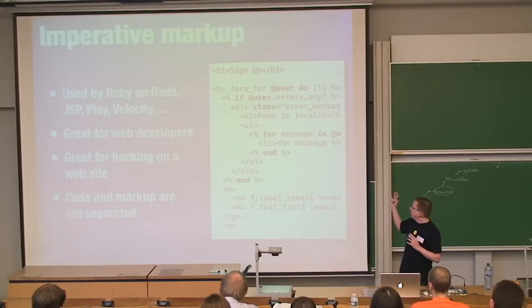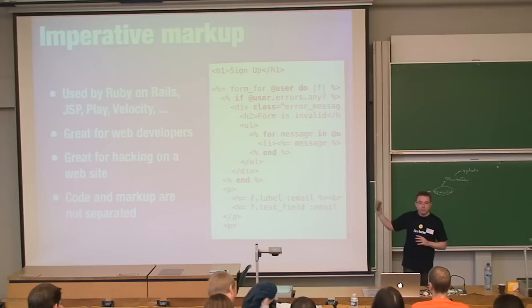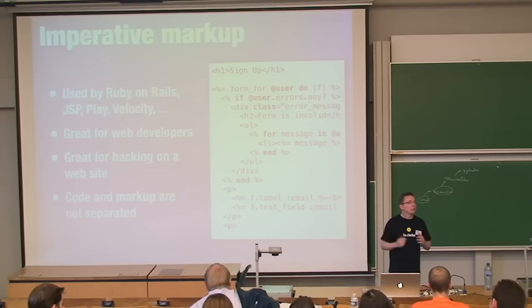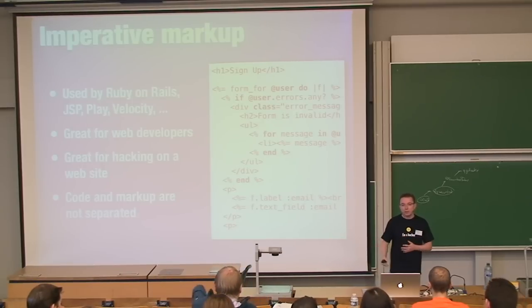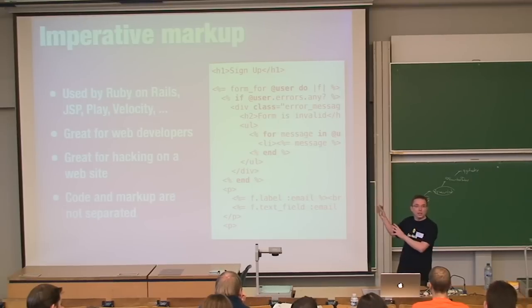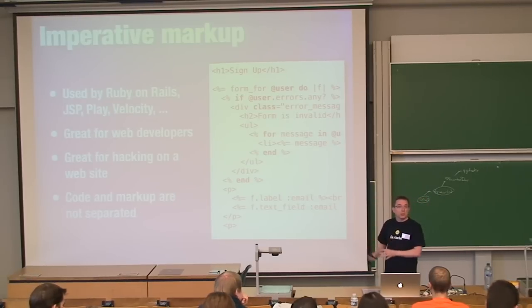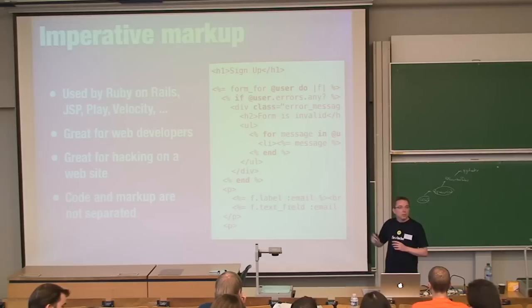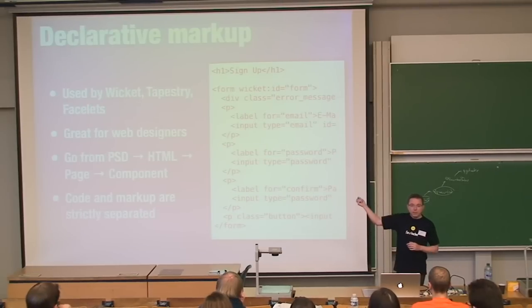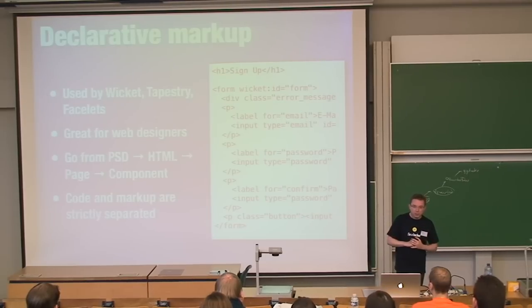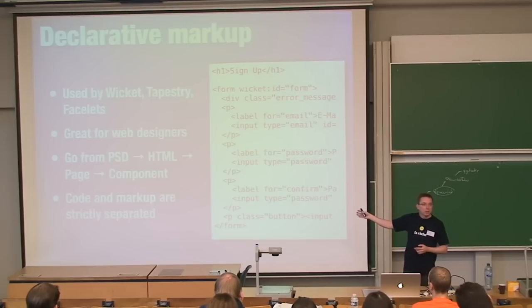In summary, there are two ways to look at markup for building web applications. Imperative markup has code and markup intersected — used by Ruby on Rails, JSP, Play framework, and Velocity templates. It's great for web developers and gives quick results, but code and markup are not separated. Conversely, declarative markup — used by Wicket, pioneered by Tapestry and also used by JSF Facelets — is great for web designers.